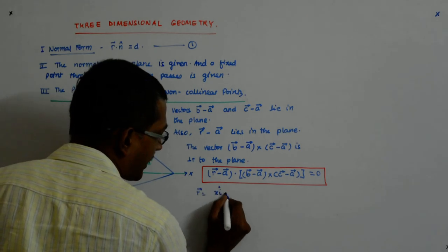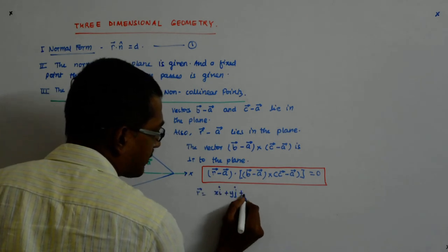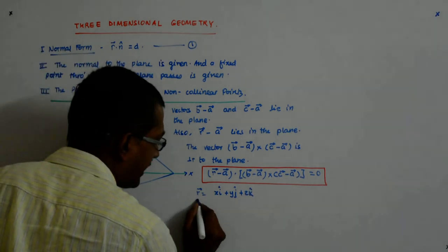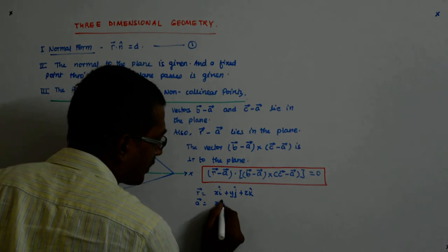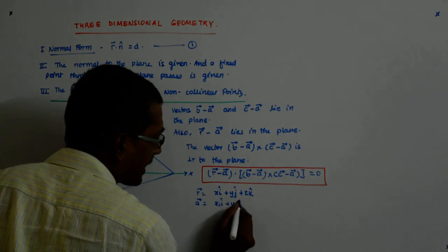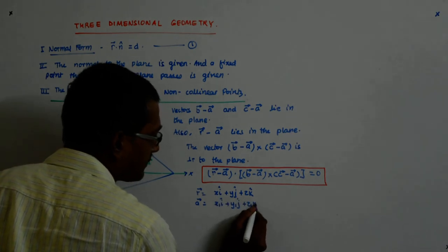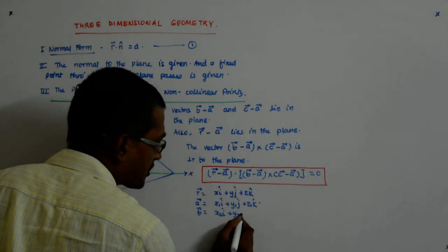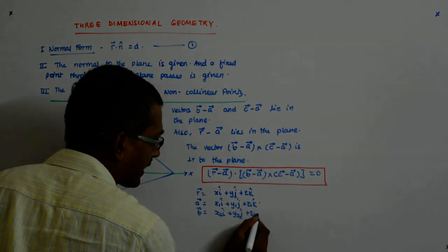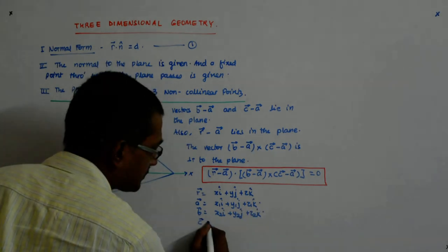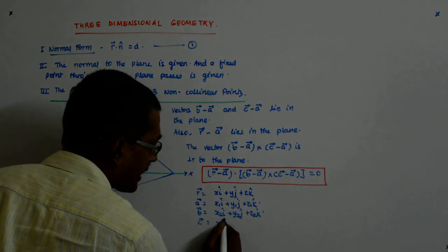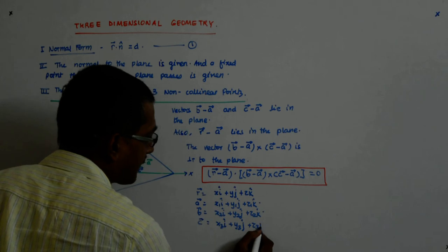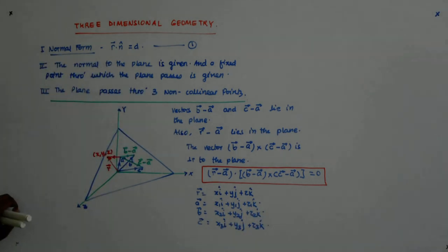Now let's write the components. r equals x i-cap plus y j-cap plus z k-cap. a equals x1 i-cap plus y1 j-cap plus z1 k-cap. b equals x2 i-cap plus y2 j-cap plus z2 k-cap. c equals x3 i-cap plus y3 j-cap plus z3 k-cap. These are our three fixed points.